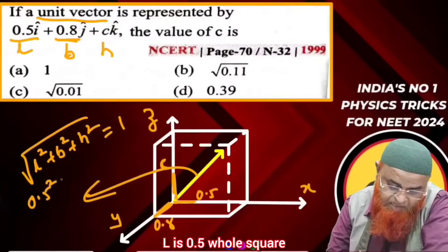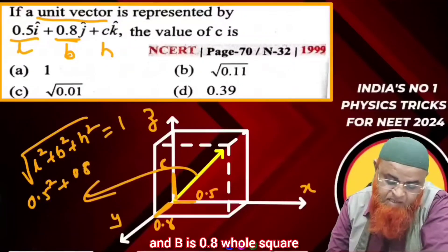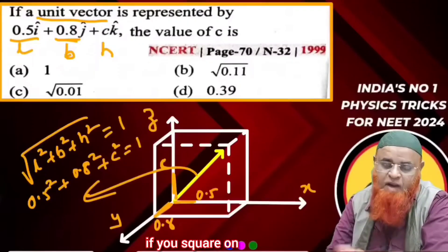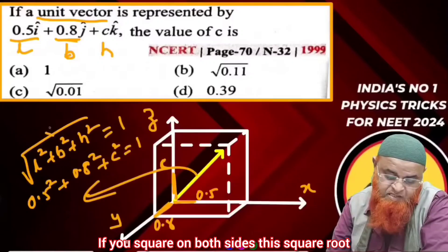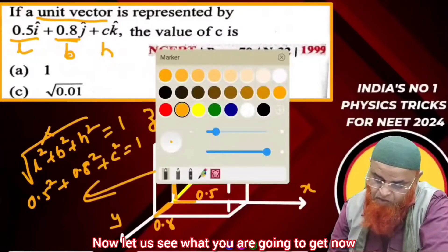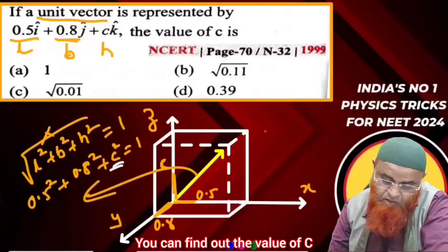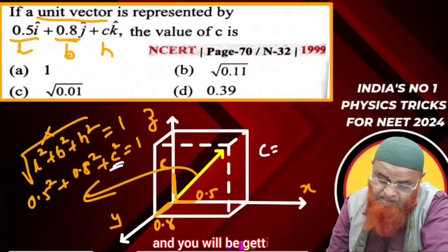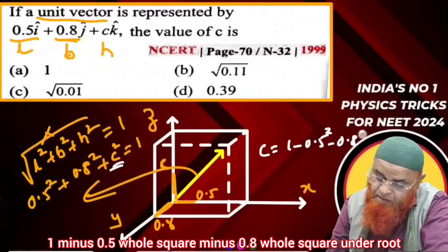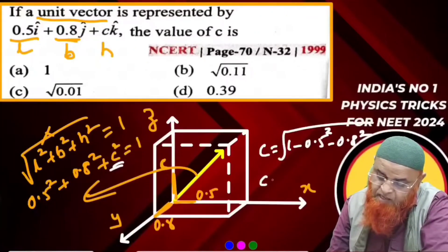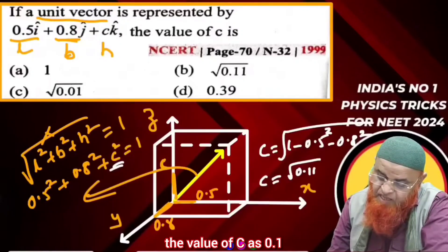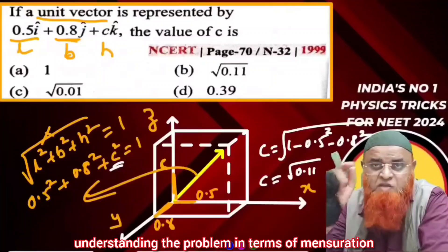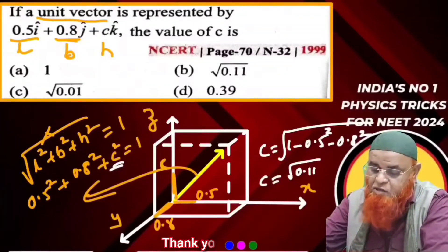So let us see what l is: l = 0.5 whole square, and b = 0.8 whole square. And h we don't know — that is c squared. c = 1 under root. So if you square both sides, this square root gets cancelled. You can find out the value of c: c = √(1 − 0.5² − 0.8²). Finally, you get the value of c as 0.11. This is the method of understanding the problem in terms of mensuration — the diagonal of a cuboid.